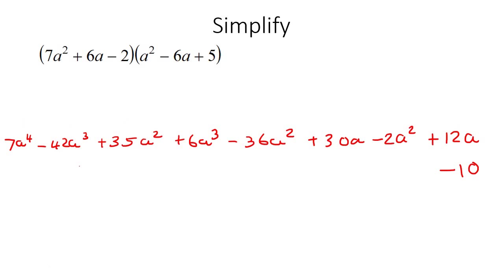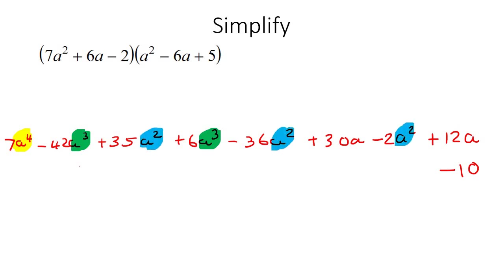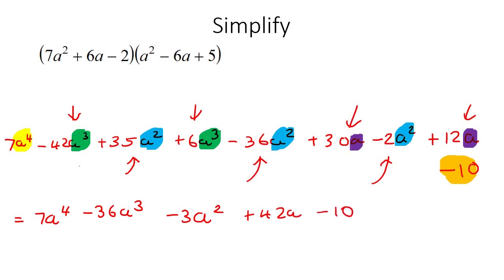Now we combine everything together — the terms that can go together. There's only one a⁴ term: 7a⁴. For the a³ terms: negative 42 plus 6 is negative 36a³. For the a² terms: 35 minus 36 minus 2 is negative 3a². For the a terms: 30 plus 12 is 42a. And then there's just negative 10 on its own. So our final answer is 7a⁴ − 36a³ − 3a² + 42a − 10.